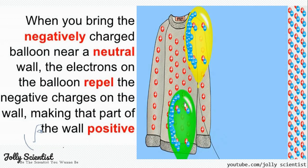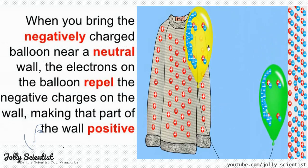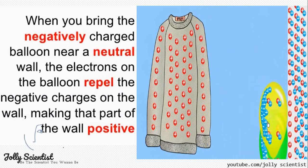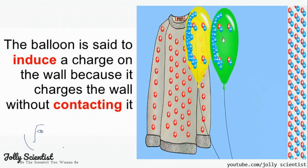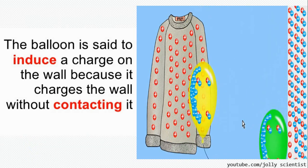Here's a simple experiment you could try. When you bring a negatively charged balloon near a neutral wall, the electrons on the balloon repel the negative charge on the wall, making that part of the wall positive. The balloon is said to induce the charge on the wall because it has charged the wall without contacting it.